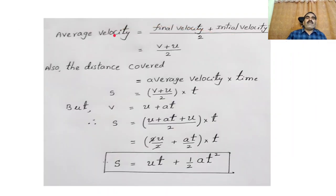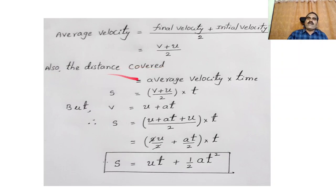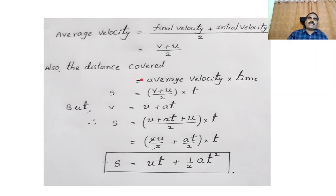Average velocity equals final velocity plus initial velocity divided by 2, that is V plus U by 2. The general formula: distance equals velocity into time. So displacement S equals average velocity into time, which is V plus U by 2 into T.